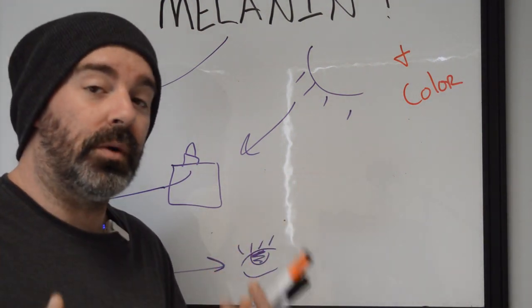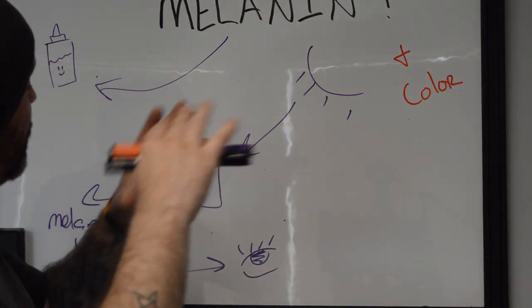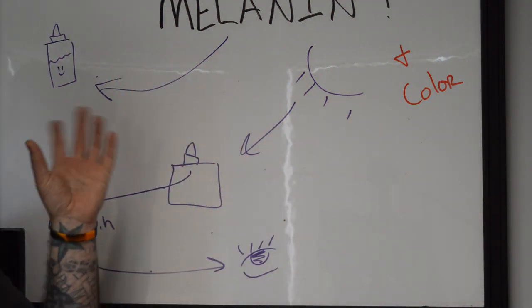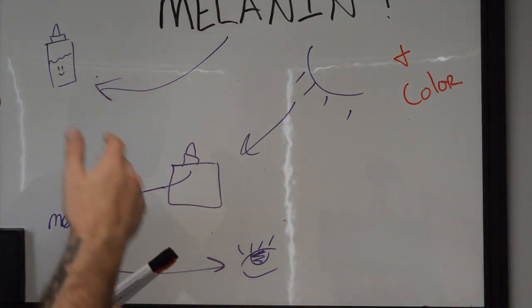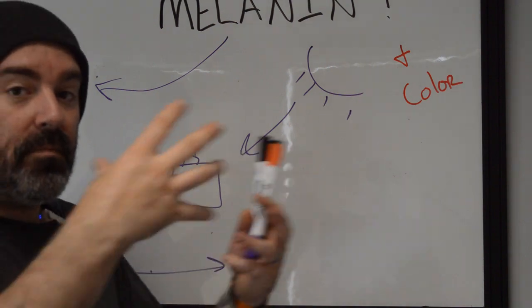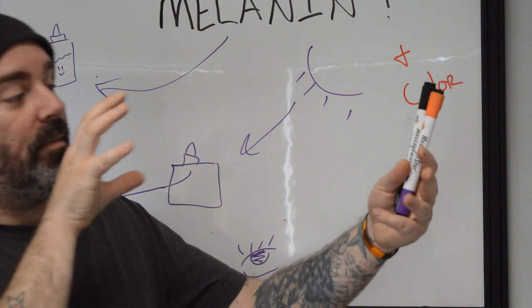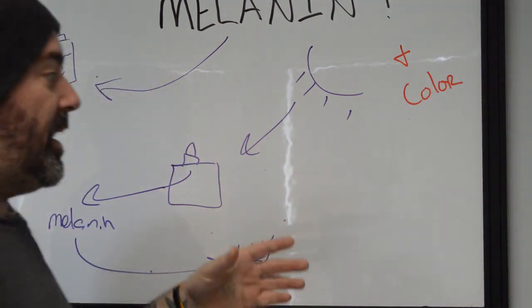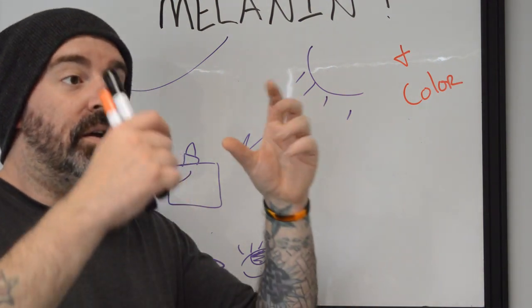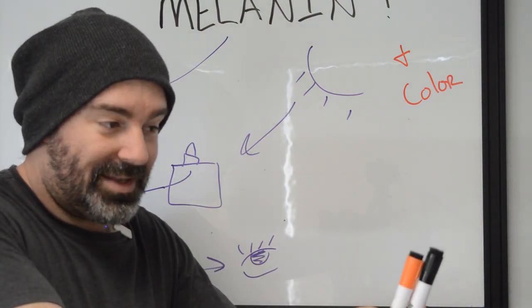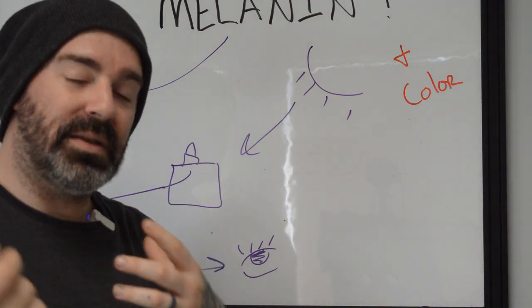Because what does melanin do? It absorbs energy. And we know from what we were just kind of briefly going over that pigment requires energy to look a specific way. So the darker that your skin is, the more energy is being absorbed, the less ability that there is for the remaining energy to get through and interact with whatever those complex mixtures are effectively enough to be able to pass the same amount of energy back through the skin so that you can actually see what's there.